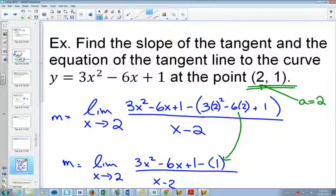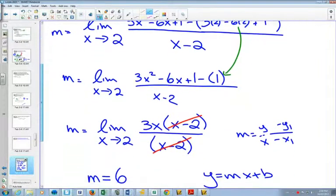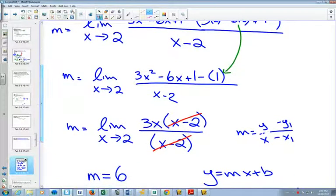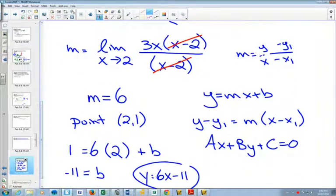Then from there, it'll work out that you can factor, or sometimes you might have to rationalize the numerator or rationalize the denominator. Use your algebra skills so that you can evaluate the limit. Once you're able to evaluate the limit, you get the slope as 2. I mean, you get the slope as 6. And then you can figure out your equation of the line from there.